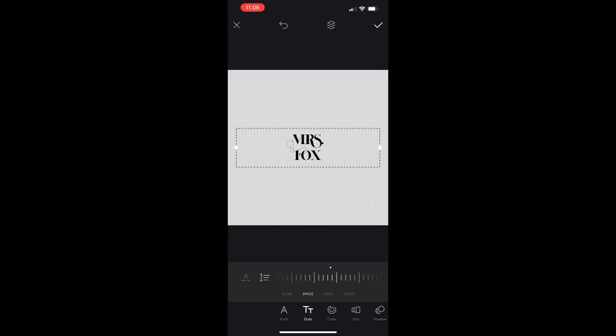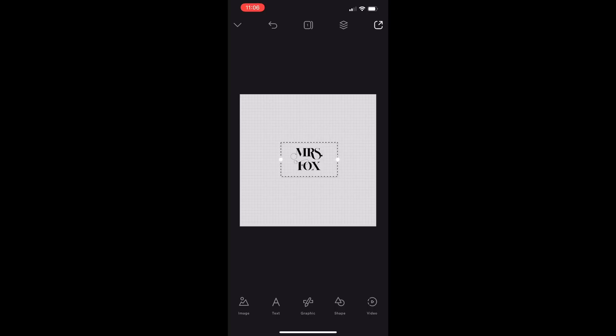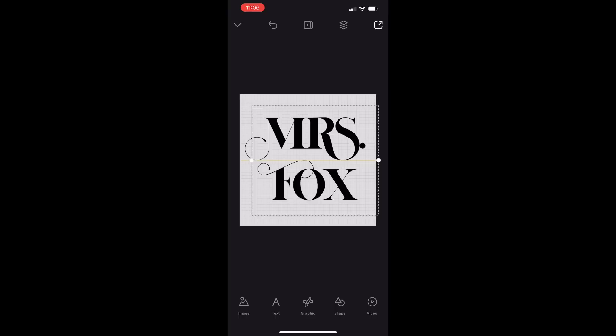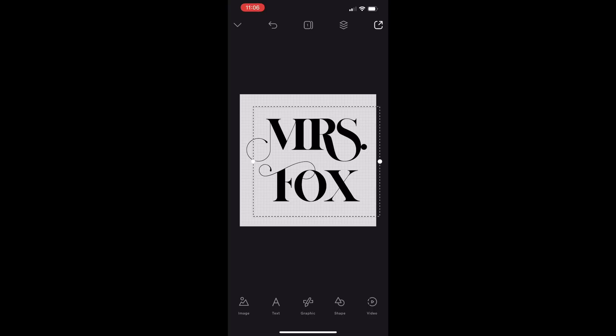I'm using Vogue or whatever that font name is for this one. I thought it was just a super cool looking classic font and I'm going to use the style option to decrease the space between Mrs. and Fox just to make it look a little more put together. I'm going to increase the size to where it almost fits all corners of our box here.